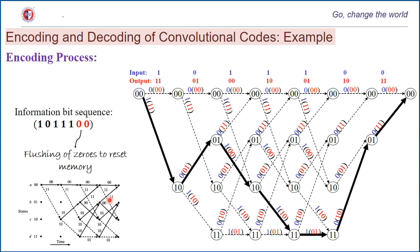We will redraw the trellis for 7 bits of duration. Beginning with the first bit, which is 1, we start at the zero state. With input 1 from state 00, the output will be 11, and it reaches state 10. The next information bit is 0. With input 0 from state 10, it takes the upper path with output 01. The path is darkened so that when we traceback, we know what path was traced by our information bit sequence.